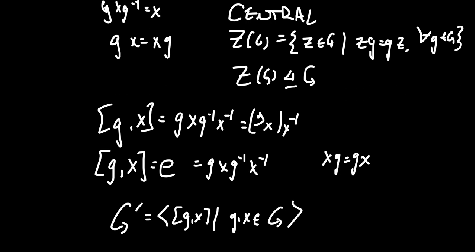An important subgroup in group theory is G-prime, the commutator subgroup — the subgroup generated by all commutators, where g and x range over the elements of the group. There may be elements in the subgroup that are not themselves commutators but are products of commutators. The commutator subgroup is also a normal subgroup of G, and both the center and the commutator subgroup measure how abelian a group is.